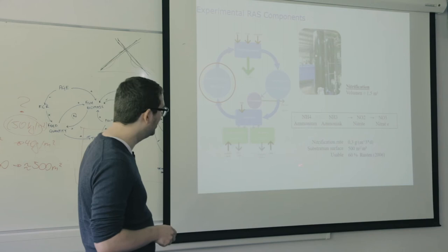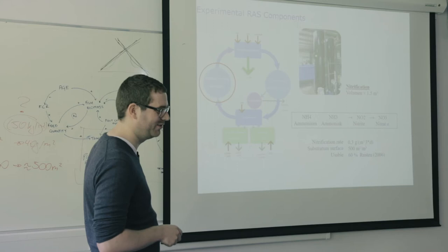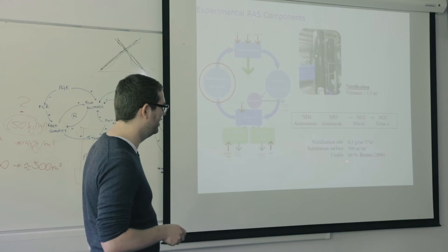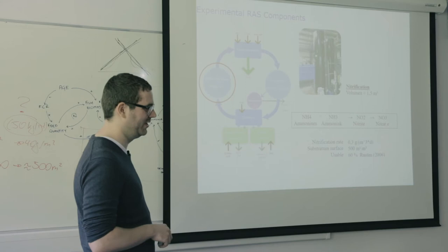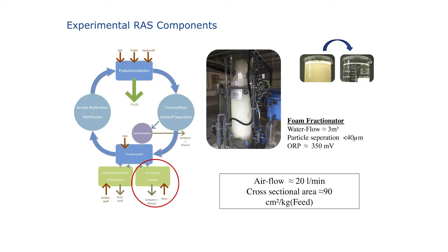Here are the numbers — you may remember these from Simon. We had the substrate surface; it looks like we had a better substrate. We had more surface per cubic meter. But nonetheless, as Rosten's publication about biofilm noted, no more than 60% of the surfaces are usable for the bacteria.